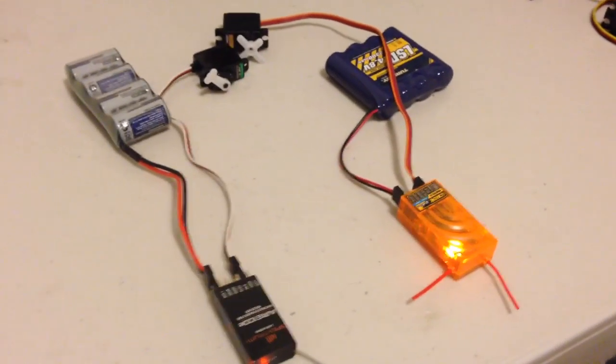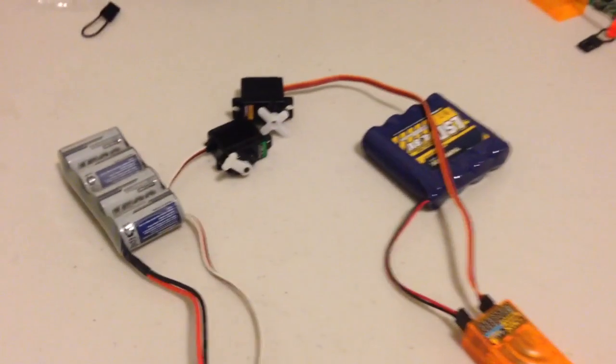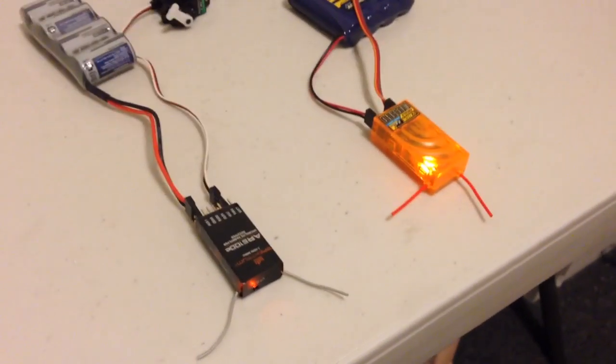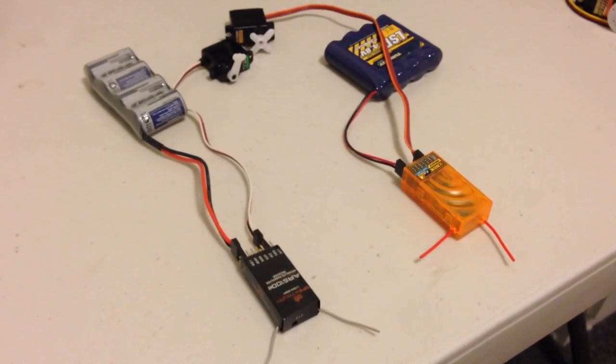When I turn off the transmitter, what you'll see is both receivers going into failsafe and the throttle channel going to idle. So I'll do that now. Turning off the transmitter, you'll see they're both in failsafe.